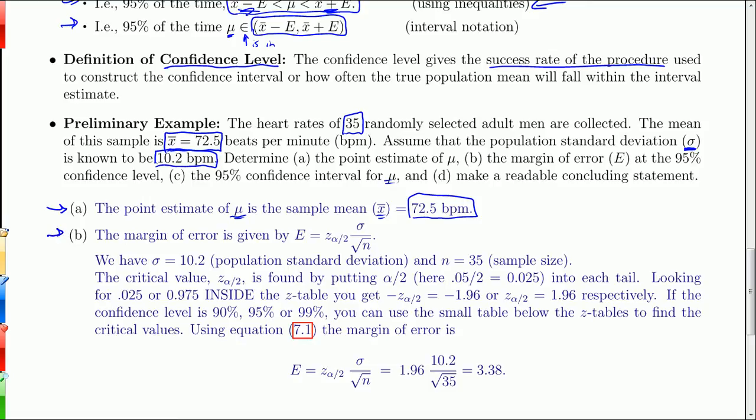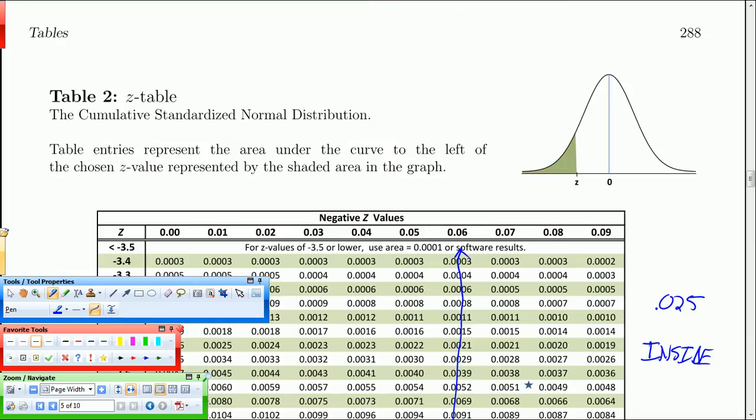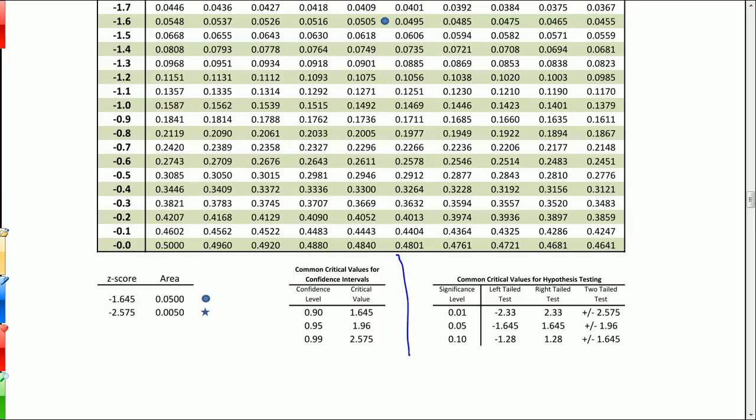The margin of error. Remember that was back on the previous page looks like this. Z sub alpha over 2. And we can find those values Z sub alpha over 2 by putting .025 in the one tail. And then looking for our Z value inside the chart. Which we did on the previous page. There's something worth noting though. And I'll point it out right here. There's a little shortcut. A little cheater table that's put in here to help you out with these values. And so here they are.